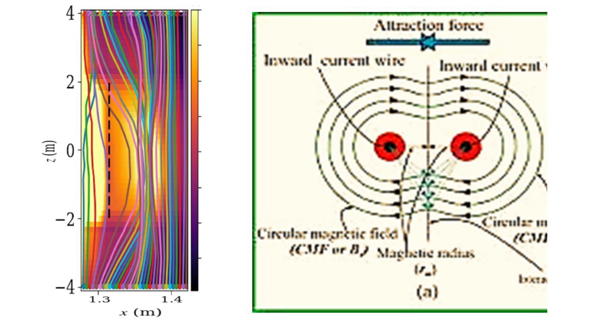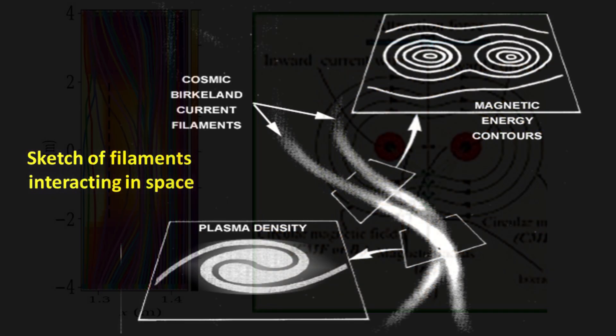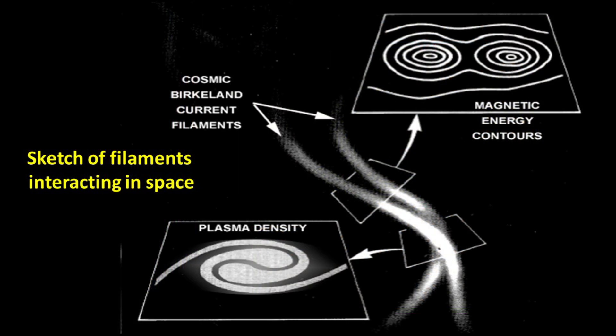Here is a sketch of plasma filaments interacting in space. Where the filaments are more or less parallel, they will be attracted. At the closest point of interaction, the shape of the plasma changes to become a thin disk. As the interaction continues, the shape of the disk evolves to the bottom left, figure for the plasma itself, and to the top right for the magnetic fields.